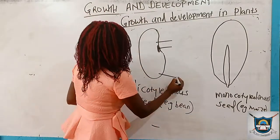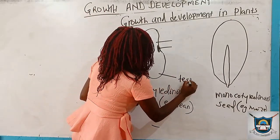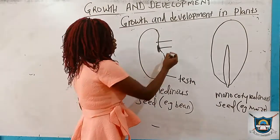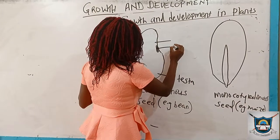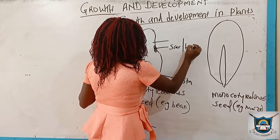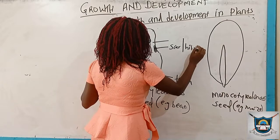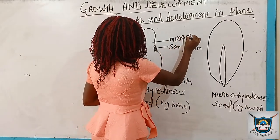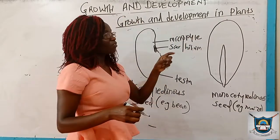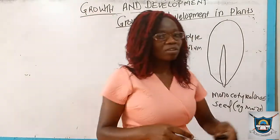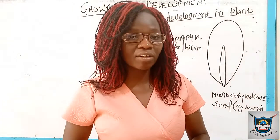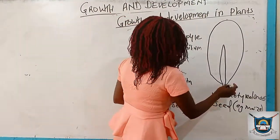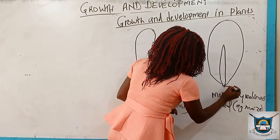The seed has got the seed coat. We have also seen that the seed has a scar where it was attached, and this scar is also called the hilum. There is also the micropyle — a small pore whose purpose is to allow water and oxygen to get into the seed. The embryo consists of the plumule and the radicle.